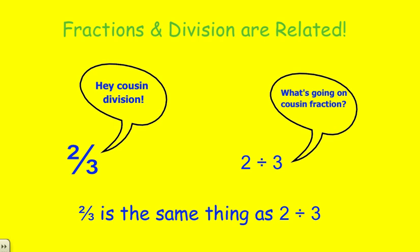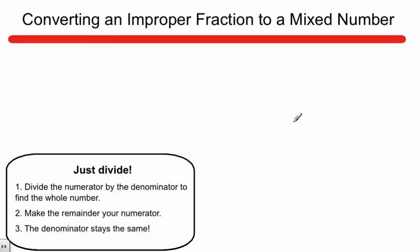This slide is just to remind you that fractions and division are related. What I have here is a fraction 2 thirds, and over here is 2 divided by 3. These are related because 2 thirds is the same thing as doing 2 divided by 3. The reason I bring this up is because it's very important for the next thing we're going to learn, which is going quickly from an improper fraction to a mixed number.